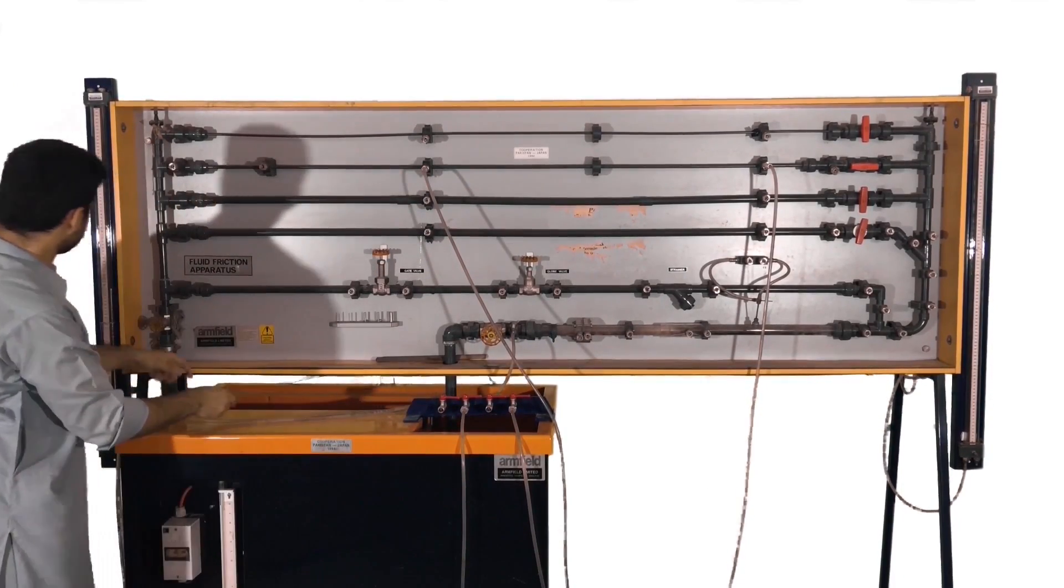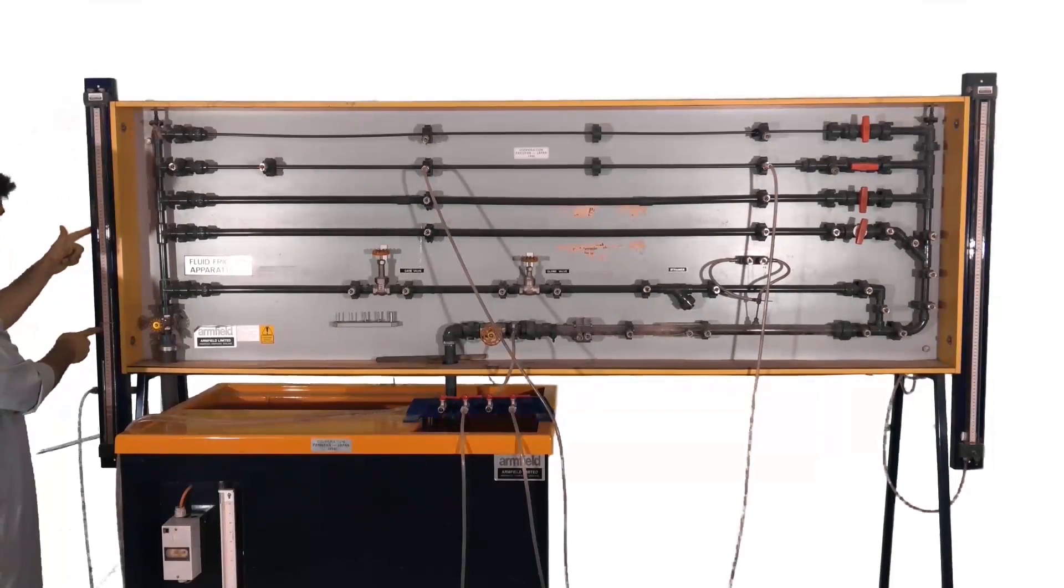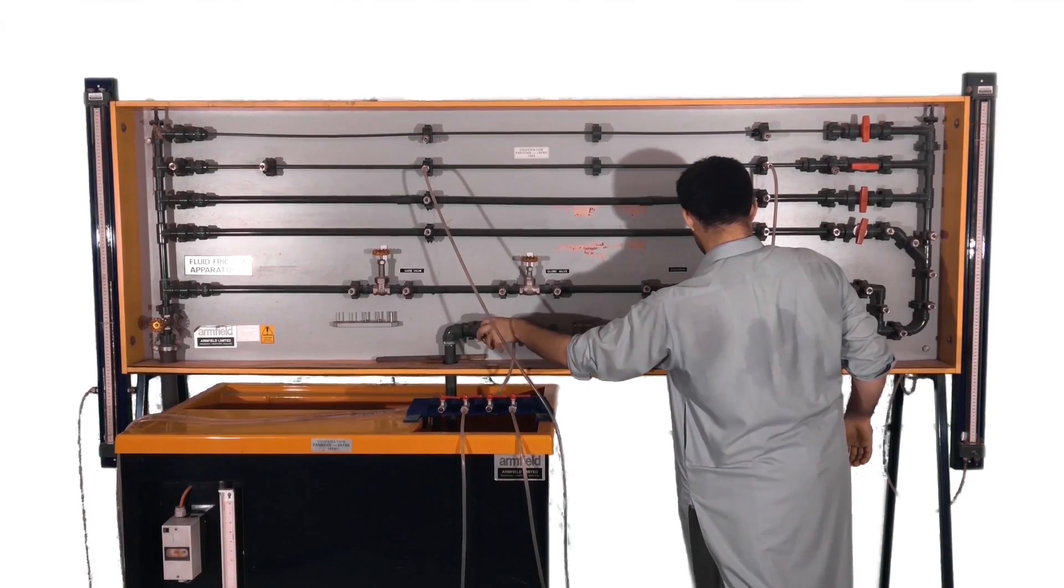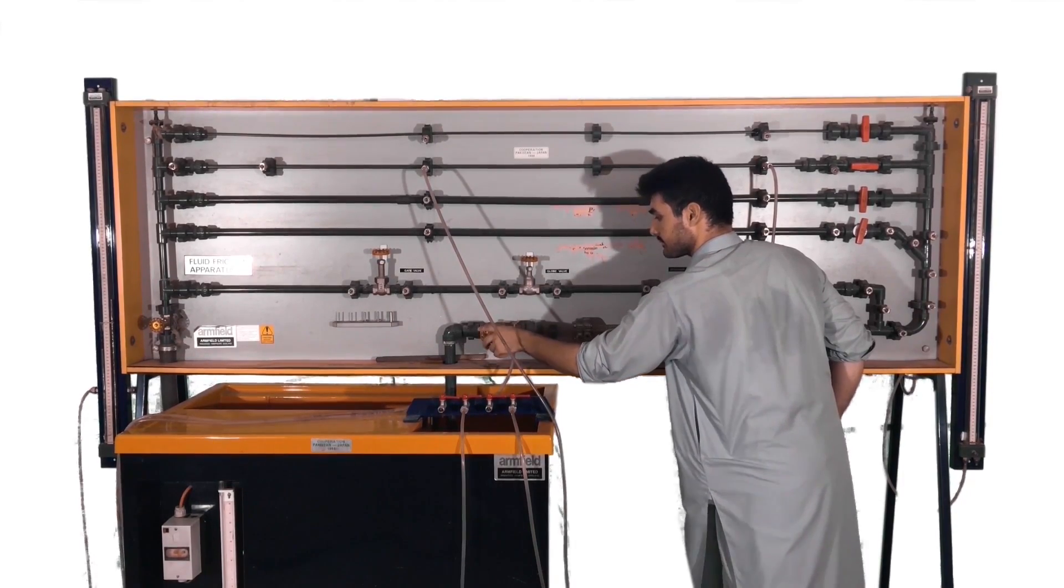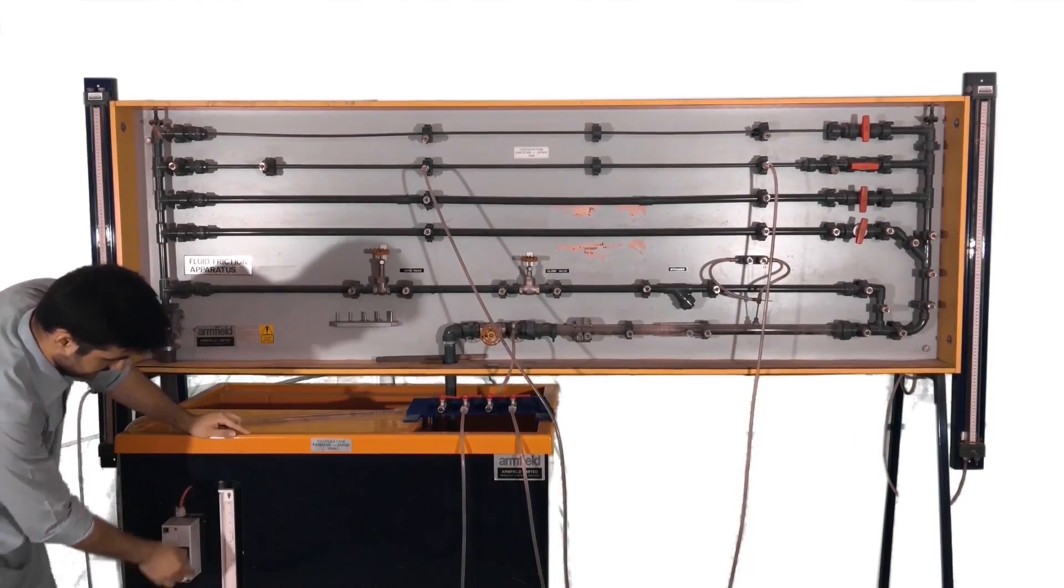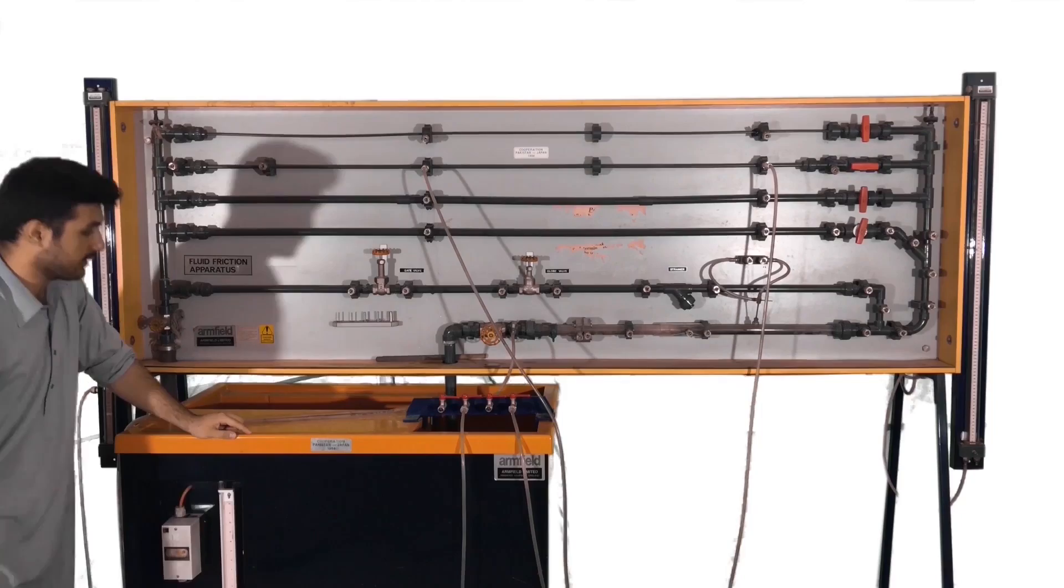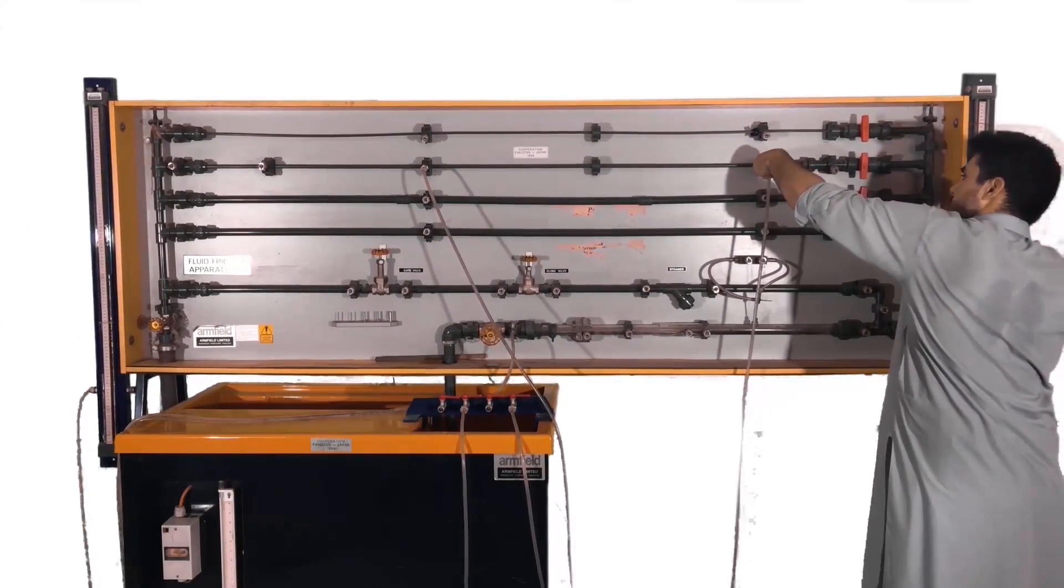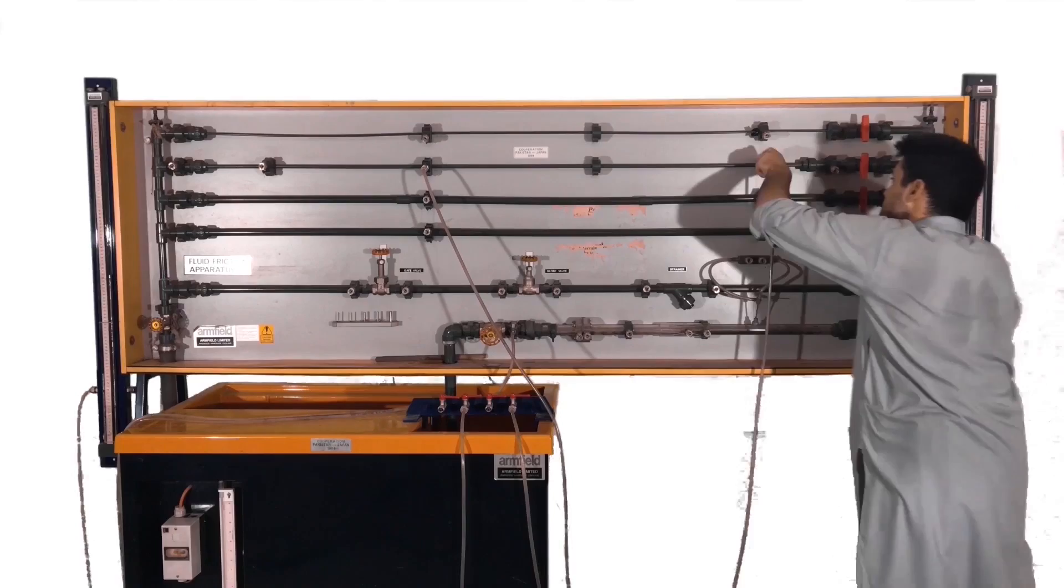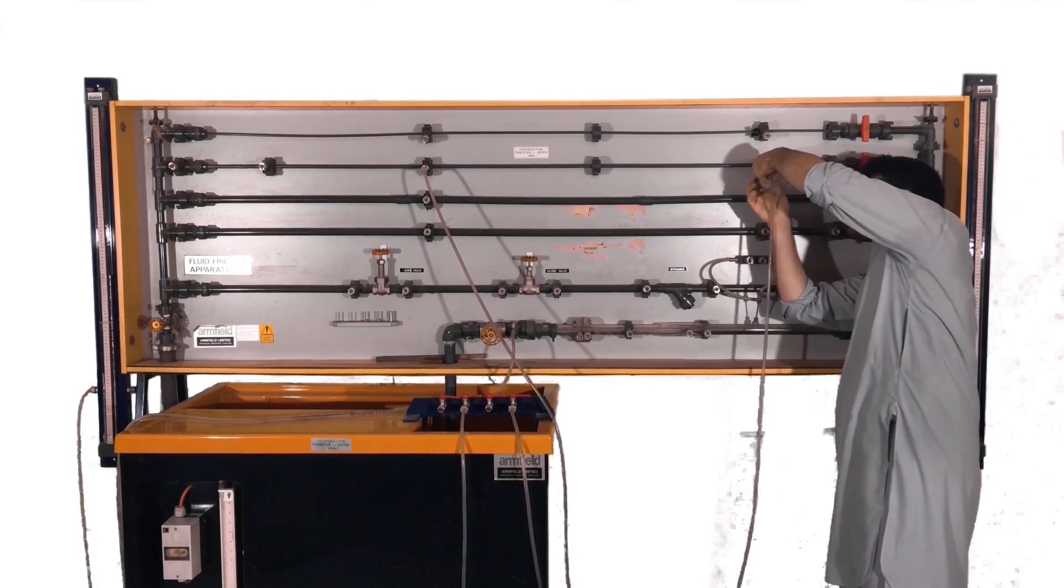These tubes are then connected to the mercury manometer. We also open the outlet control valve. Now, with this setup, all the air has been removed inside the apparatus. We also note down the volume that has discharged and the time it took. Do be careful when locking and unlocking these flexible pipes on the tapping points.